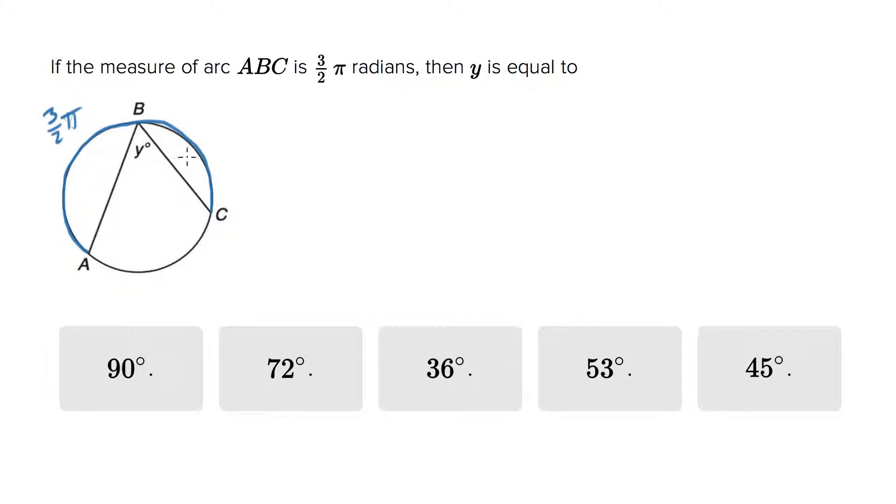Now, you could solve this whole problem using 3.5π radians. I would prefer to switch to the easier-to-handle arc AC. The sum of all the radians in a circle is 2π. So if I have 3.5π eaten up by the blue, I must have 1.5π radians in the red zone there.